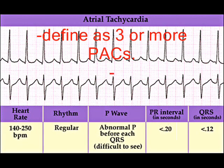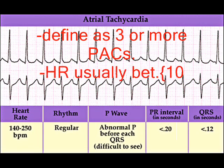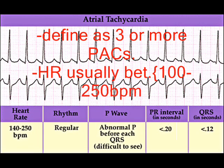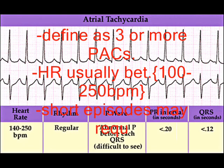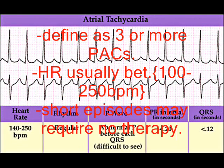Atrial tachycardia in its focal form is defined as three or more PACs, with heart rate between 100 and 250 bpm. Short episodes may require no therapy.